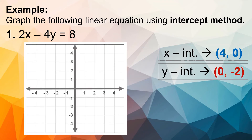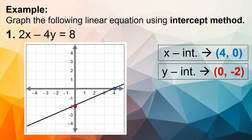Now let's graph. For the x-intercept, we look at the x-axis. Since our coordinates are 4 and 0, we locate positive 4 on the x-axis. For the y-intercept, we look at the y-axis. Since the coordinates are 0 and negative 2, we locate negative 2. Now we may draw a line through the two points. This will be the line of our linear equation.